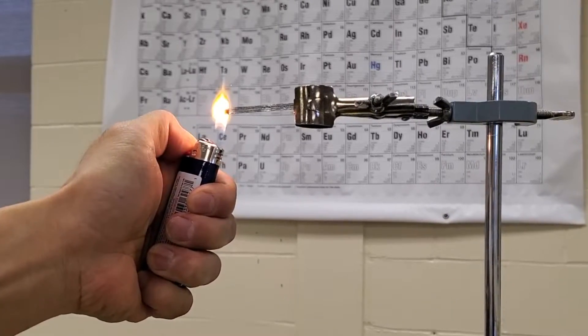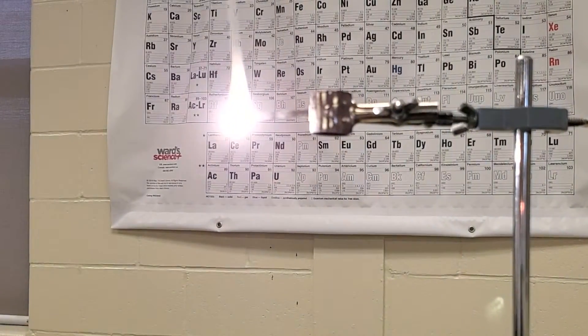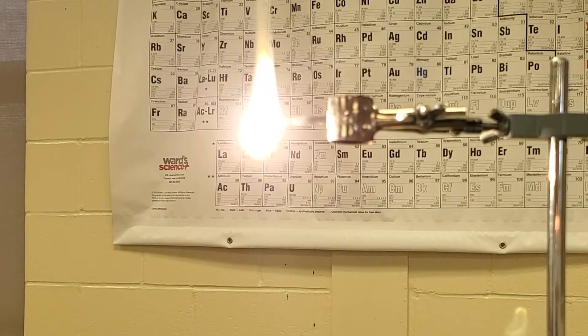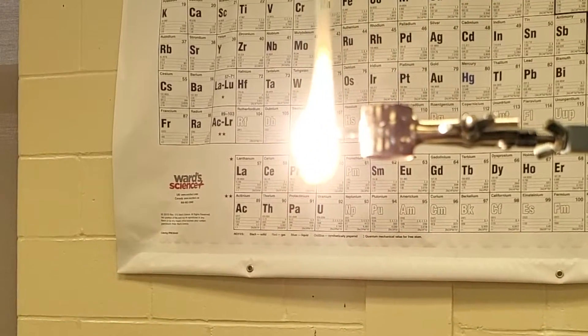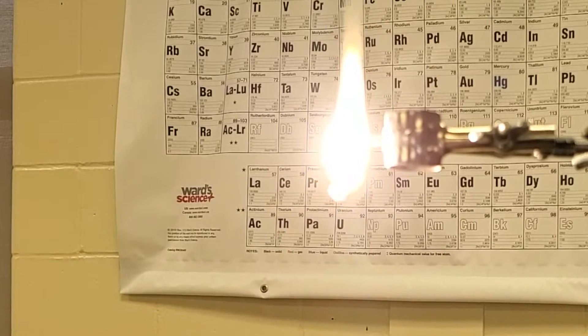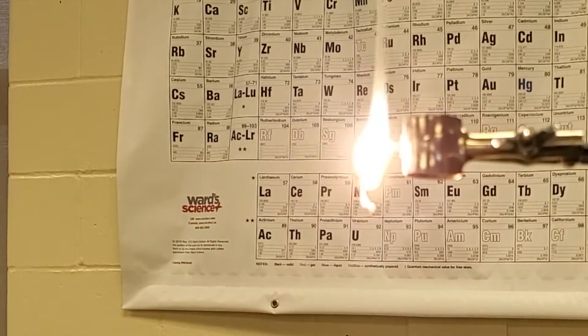I describe the reaction as burning with a bright white light. And after the reaction, you see what's left is this dull white brittle product called magnesium oxide.